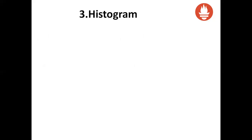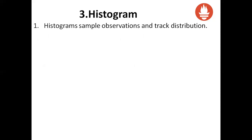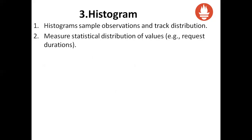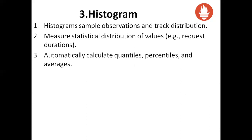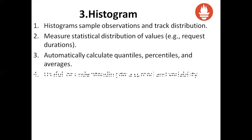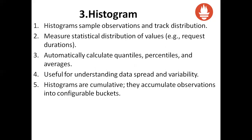The third type of metric is the histogram. Histograms sample observations and track distribution. They measure statistical distributions of values like request durations. They automatically calculate quantiles, percentiles, and averages. If you want to calculate averages or percentiles, you go with the histogram metric. They are useful for understanding data spread and variability. Histograms are cumulative — they accumulate observations into configurable buckets. We will see what buckets are and how to use them in the next slide.